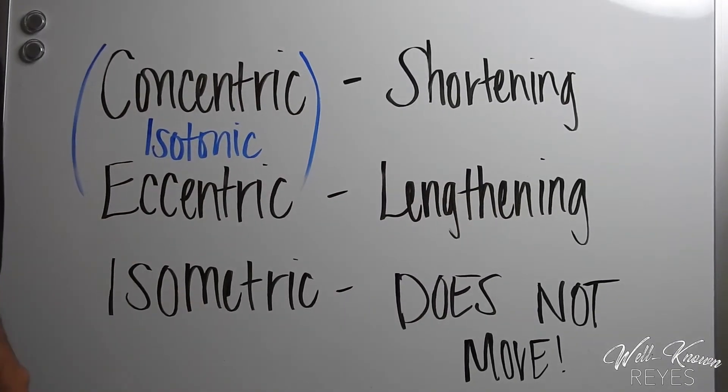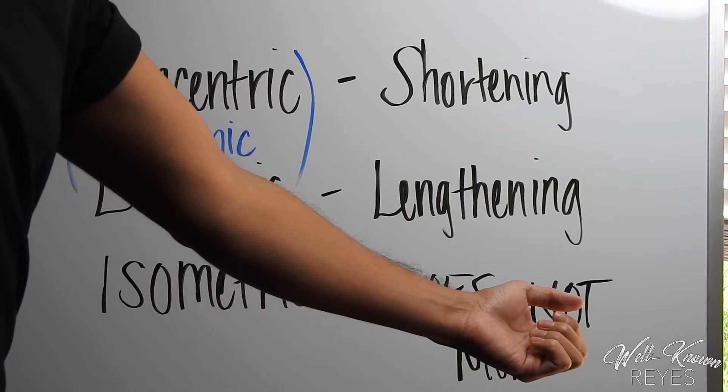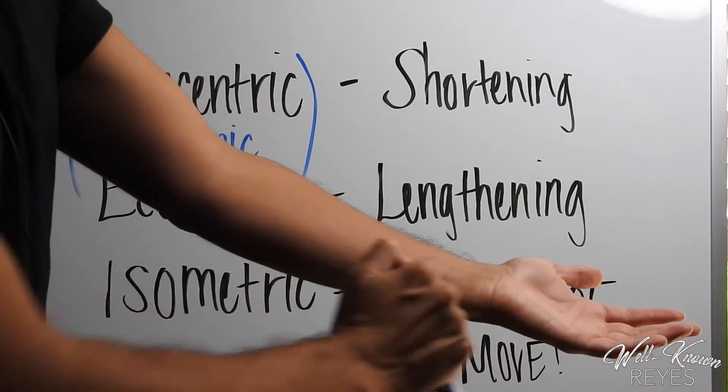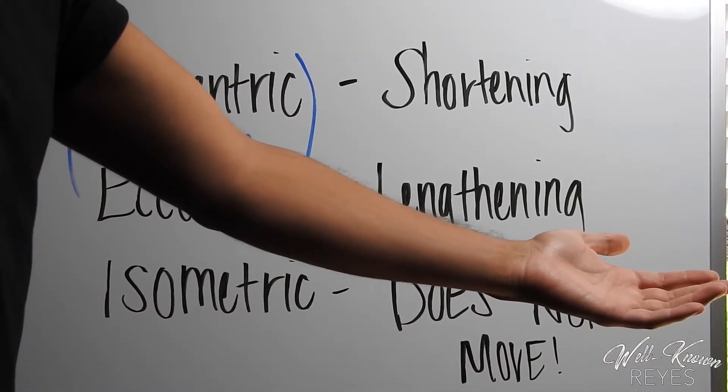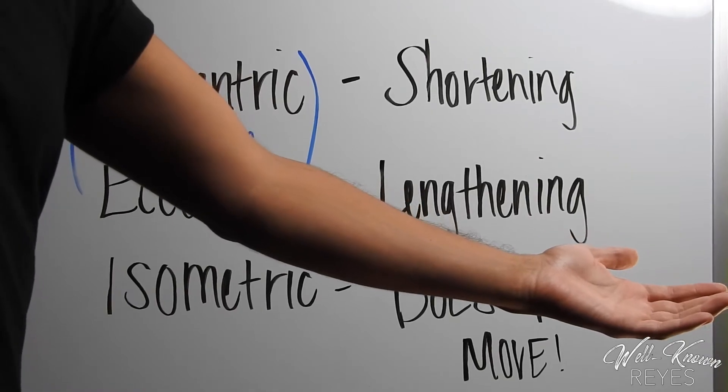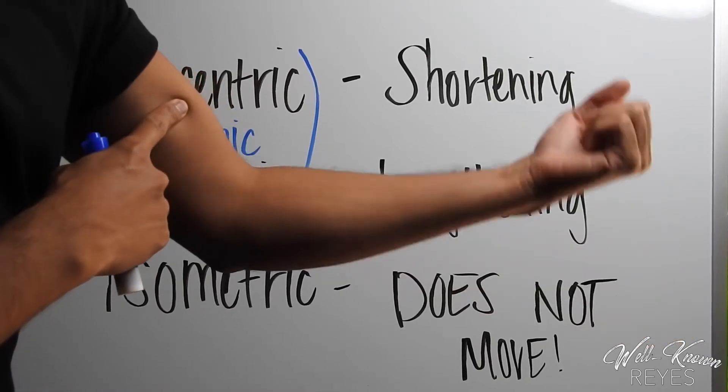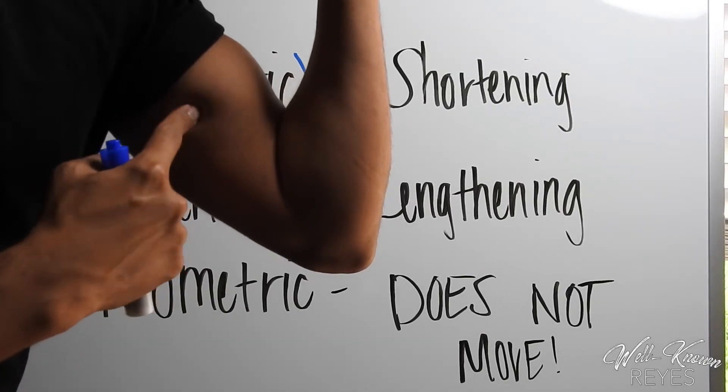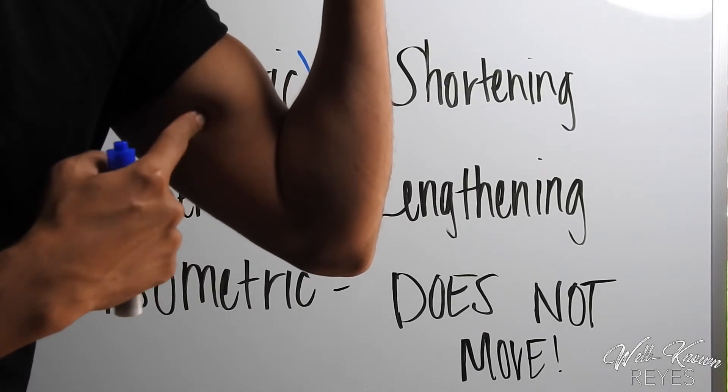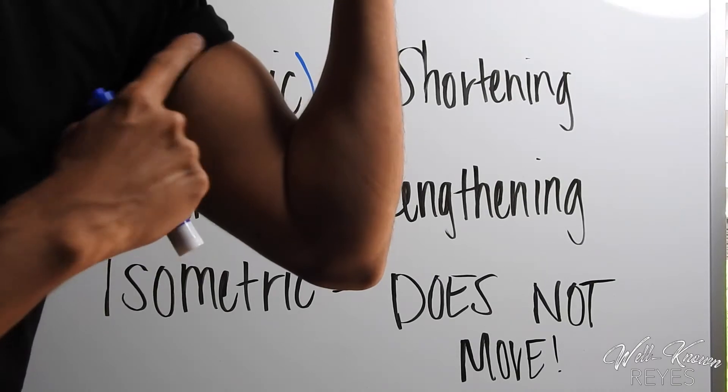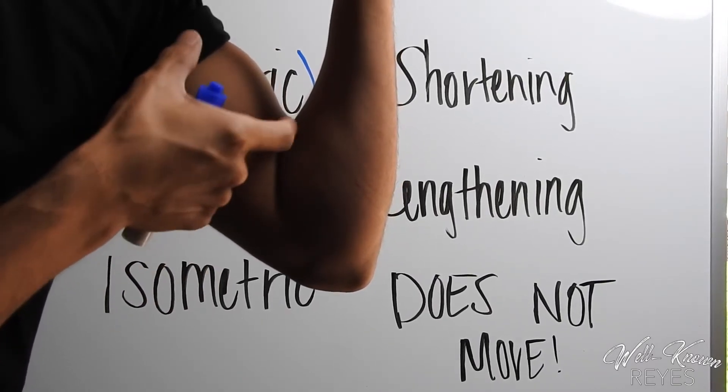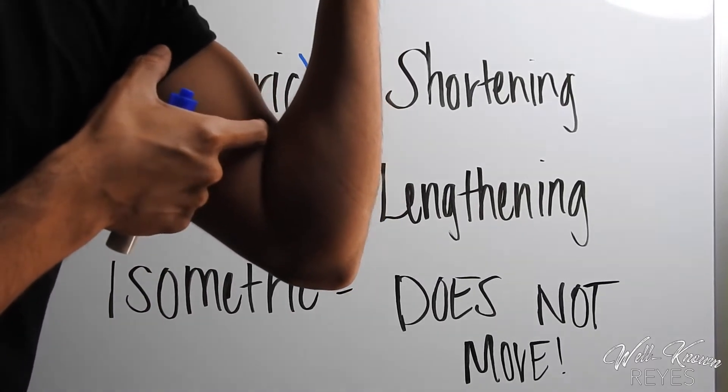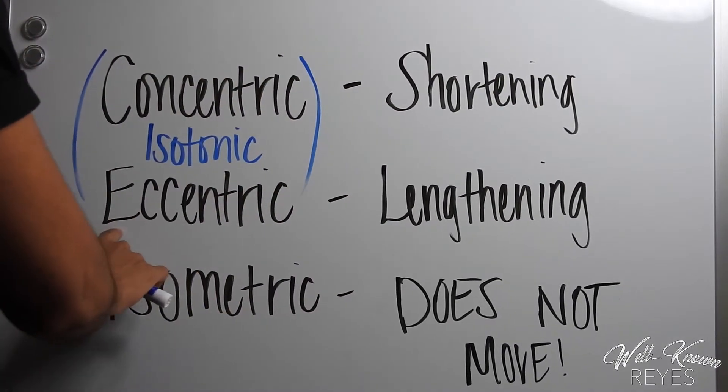I'm going to use my bicep as an example. Right now my arm is relaxed. If I want to do a concentric contraction at the biceps, I'm going to flex. So y'all see that big bicep, my gains right there. This muscle right here is shortened. This is concentric.